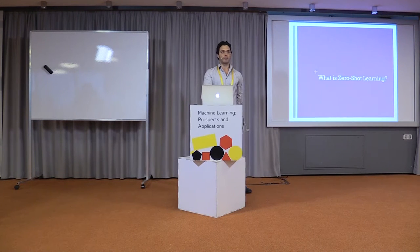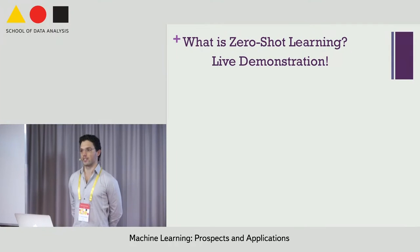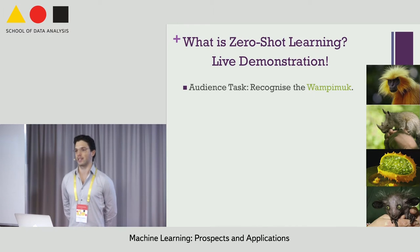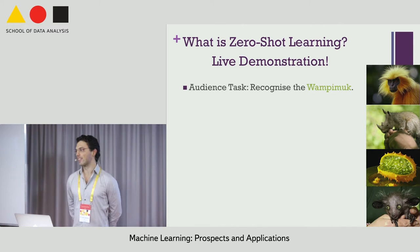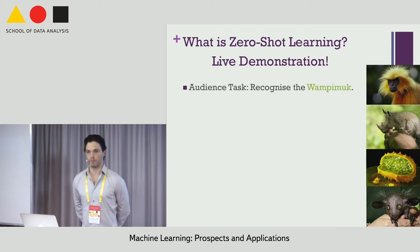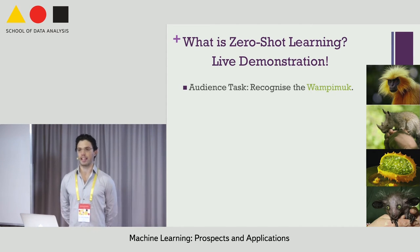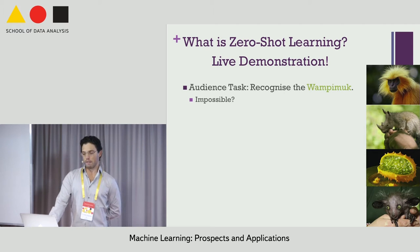What is zero-shot learning? I'll introduce it by way of a live example. I'm going to ask the audience to do some zero-shot learning by showing you some images and asking you to recognize a particular object among them. Can anyone recognize this object? Usually people can't do this one, and the reason you probably can't is because you have probably never seen any examples of this wampum category before.